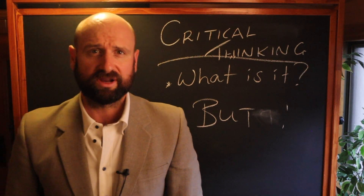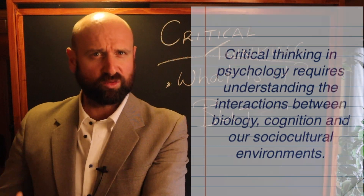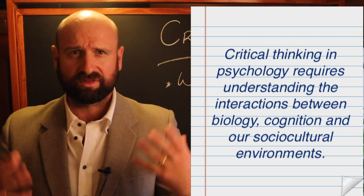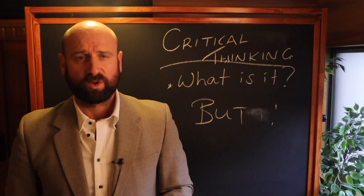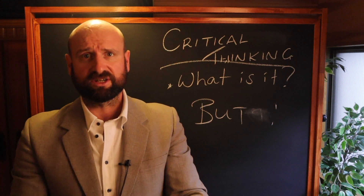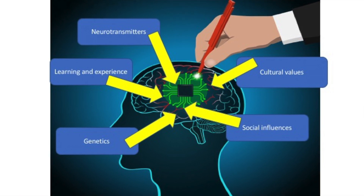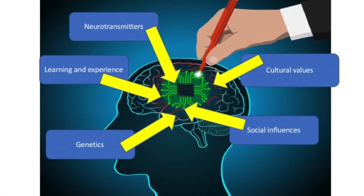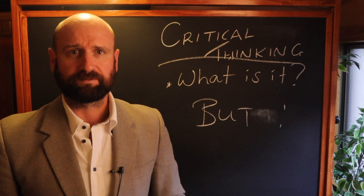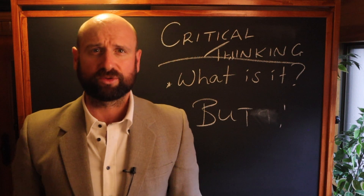The same goes for the sociocultural approach — I might look at a behavior and say we can explain that from cultural upbringing or social factors, but we can't ignore the biology. We also can't ignore the role of cognition, how we think. When looking at the cognitive approach, I can say we have to understand cognition, but what changes people's cognition? Is it our sociocultural environment? We can't separate the mind from the brain — those two are inextricably linked. And again, with studies: but maybe that study was done in a lab — could we apply those findings to a real life environment?